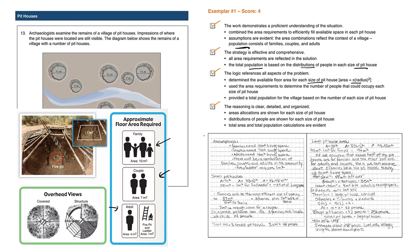Let's take a look at this four out of four good answer. Assumptions - nice bullet points here. Families need 10 meters squared of living space. That comes from the chart. Couples need seven. Adults need four. There will be a combination of families, couples, and adults in the community. Fire ladder requires one. Nice little picture here.